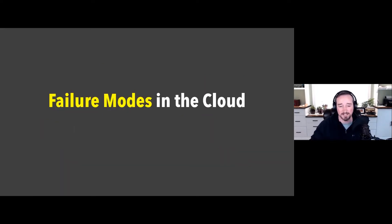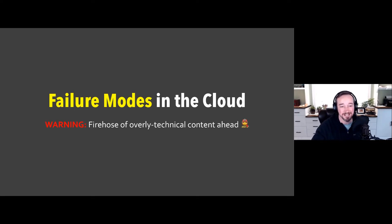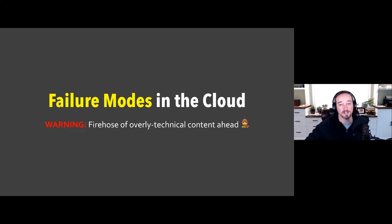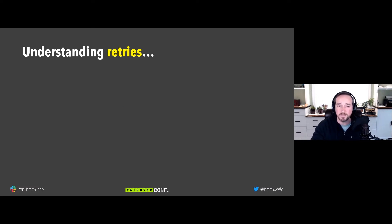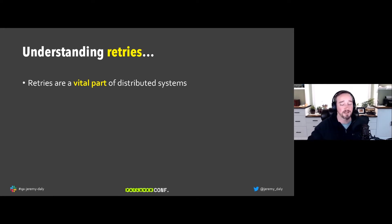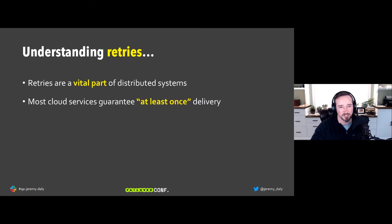Now, failure modes in the cloud. First: retries are a super vital part of any distributed system. Networks fail all the time — if we only try once and it fails, our system would barely ever work. Most cloud services guarantee at least-once delivery, which means you'll always get that event delivered, but that same event might be received more than once. You need to ensure all operations are idempotent.